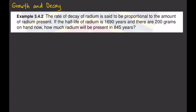Example 2: The rate of decay of radium is said to be proportional to the amount of radium present. If the half-life of radium is 1,690 years and there are 200 grams on hand now, how much radium will be present in 845 years? We know this is an exponential decay problem because of the phrase 'proportional to the amount of radium present' — that is by definition exponential decay.